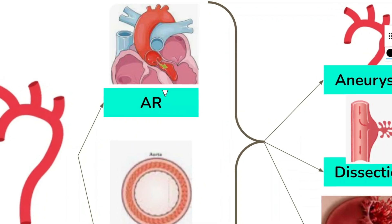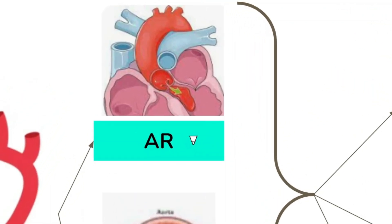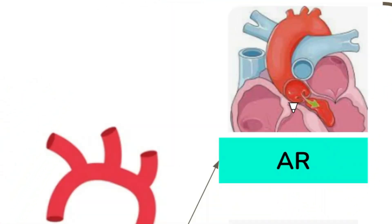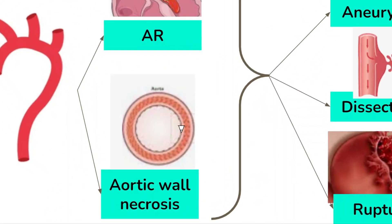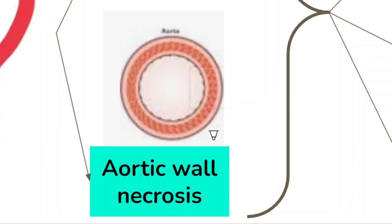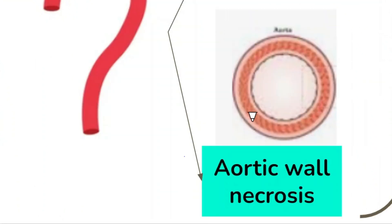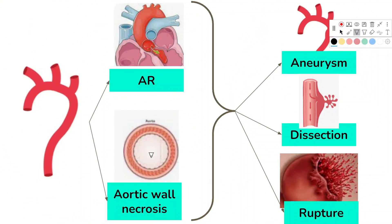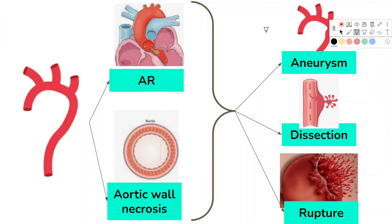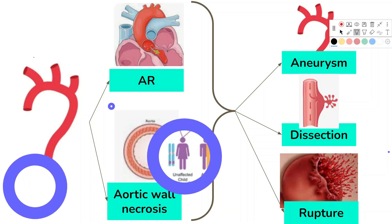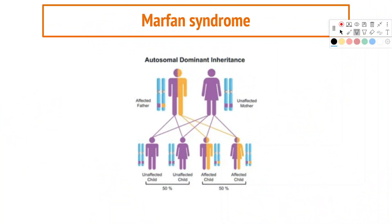The aorta also undergoes cystic medial necrosis, in which there is degeneration of the aortic wall. Both the dilatation and the necrosis weaken the aorta, making it susceptible to aneurysm, dissection, and rupture — all of which can be life-threatening. Marfan syndrome is also a risk factor for mitral valve prolapse.